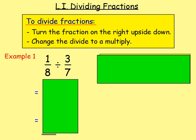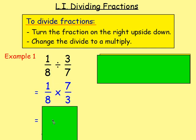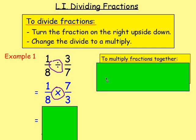First example: if we have 1 eighth divided by 3 sevenths. First thing — you turn the fraction on the right upside down. So we keep 1 eighth as it is, and the 3 sevenths becomes 7 over 3. Note the divide becomes multiply, and we're just straight back to what we were doing in the previous lesson — multiplying fractions.